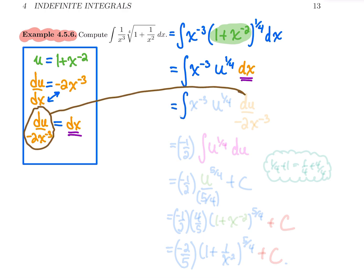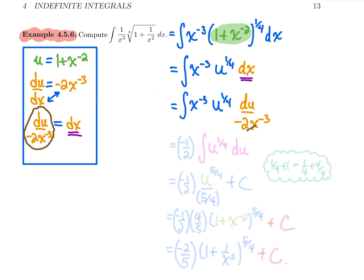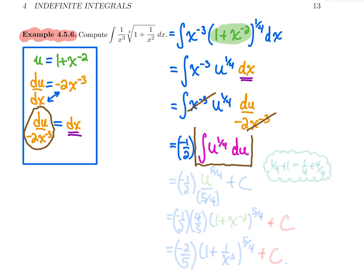Back in the integral, we have x to the power minus three — waiting to be cancelled — then u to the one fourth. Now dx blossoms into du over minus two x to the power minus three. Those two x to the power minus three terms cancel. The minus two in the denominator comes outside as a coefficient, giving minus one half times a clean power rule integral.